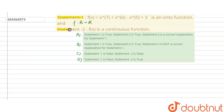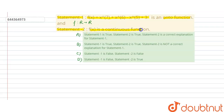Hello students. Two statements are given. Statement 1 says f(x) = x⁷ + x⁶ - x⁵ + 3 is an onto function. Statement 2 says f(x) is a continuous function. First, we solve for Statement 1.